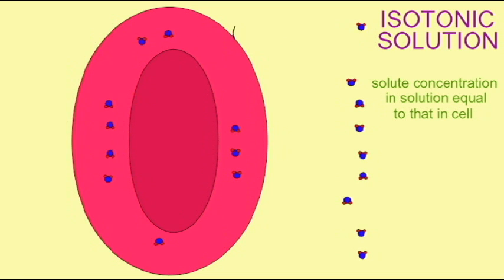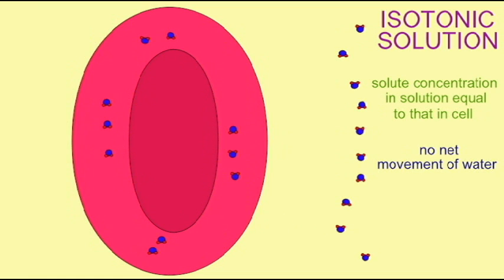While water is diffusing into the cell from the solution, and while water is diffusing out of the cell from the cytosol, the rate at which these two processes occur is about the same, and so therefore there will be no net change in the volume of the cell.